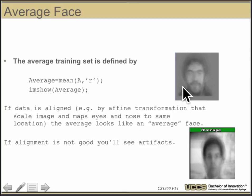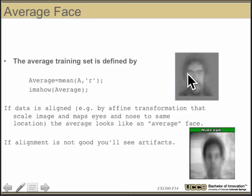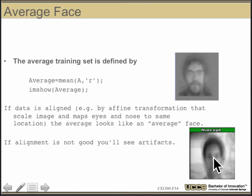If the data is aligned — and by aligned we mean the eyes and nose are in about the same place, which we can get by doing an affine transformation — then you'll see the average face looks like a face: it has eyes, nose, and in this case a mustache. If the alignment isn't very good, if the eyes aren't always in the same place, you're going to get artifacts. You can see some artifacts at the top of the head. Even if the eyes are lined up, the top of the hair or the chin can be different.